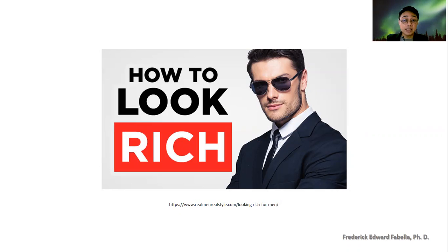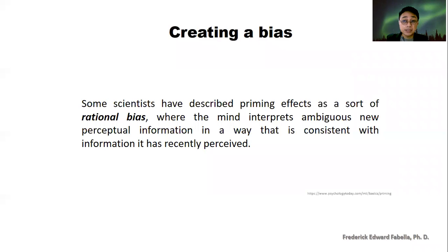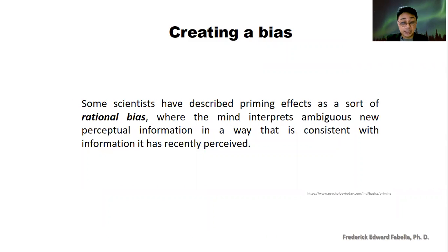Priming happens unconsciously — you don't even know it. It is about creating a bias. Some scientists have described priming effects as a sort of rational bias, where the mind interprets ambiguous new perceptual information in a way that is consistent with information it has recently perceived. So it is a rational bias.